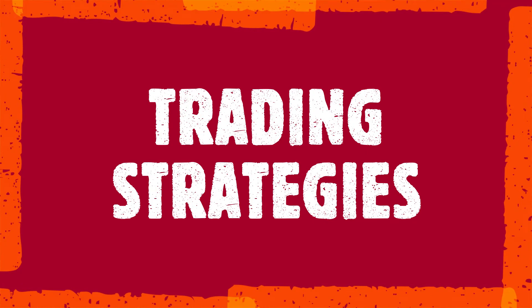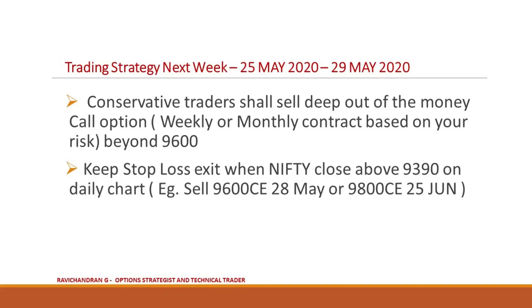Let's discuss trading strategies for next week. Since Nifty hasn't moved much compared to last week, strategies look similar with slight modification in strike price selection and implementation. Conservative traders shall sell deep out-of-the-money call options — weekly or monthly contract — beyond 9600, keeping stop loss exit when Nifty closes above 9390 on the daily chart. For example, traders can sell the 9600 call option expiring 28th May or the 9800 call option expiring 25th June. If weekly options don't have much premium, go for selling monthly call options.